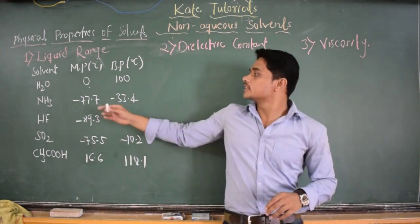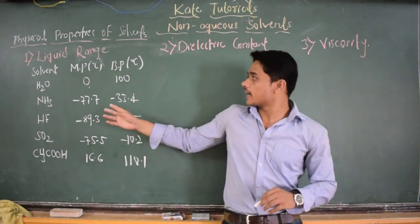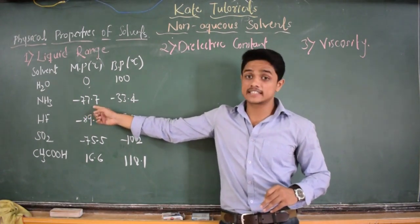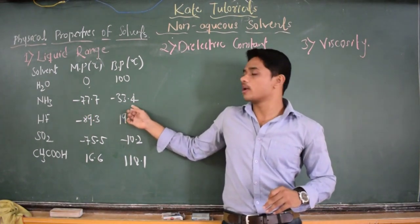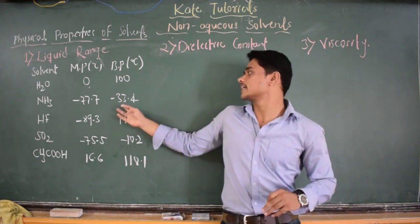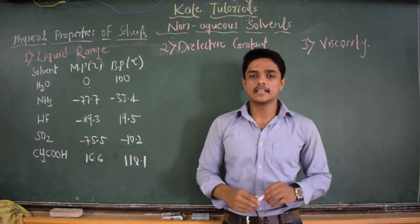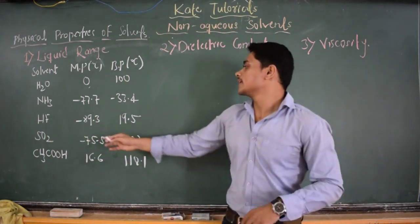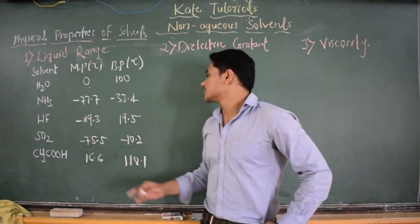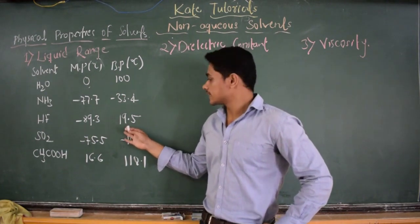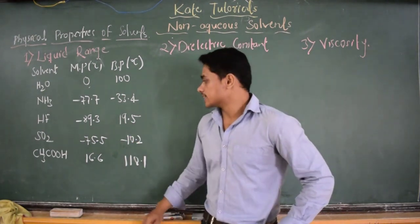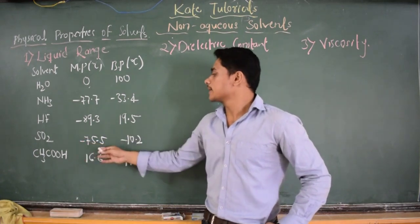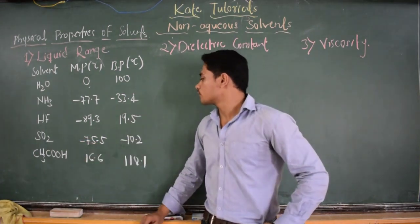The next comes liquid ammonia. Its melting point is minus 77.7 degree Celsius and its boiling point is also minus 33.4 degree Celsius. And for HF, the melting point is minus 89.3 degree Celsius and boiling point is 19.5 degree Celsius. And SO2, that is sulfur dioxide, its melting point is minus 75.5 degree Celsius.